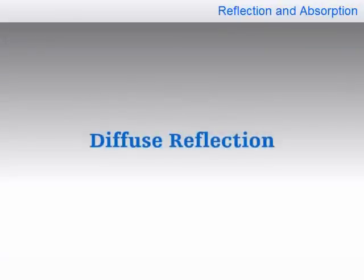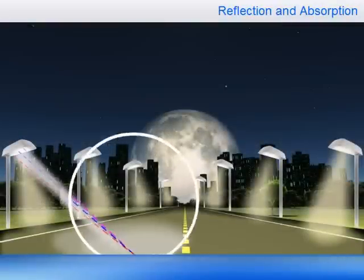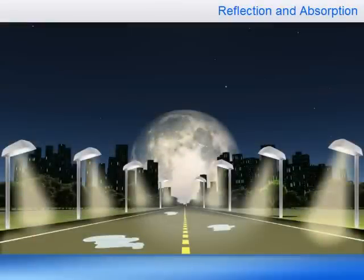Diffuse reflection: if the surface shows a certain degree of irregularity, the incident light gets reflected in all directions. This type of reflection is called diffuse reflection. There are several mixed forms of reflection between specular and diffuse.